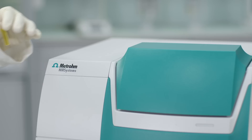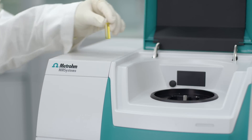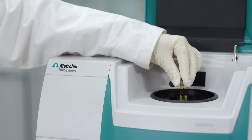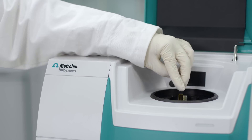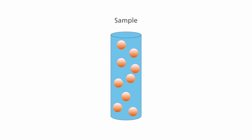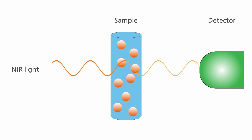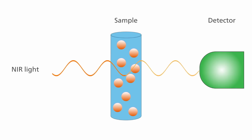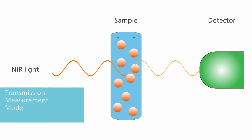For the analysis of liquid samples or suspensions, the sample is placed between the NIR light source and the detector. NIR light is transmitted through the sample, and any unabsorbed light is detected by the detector. This measuring mode is known as transmission.